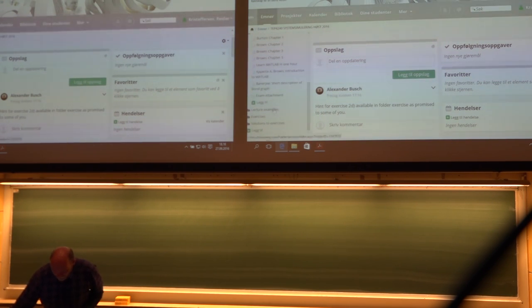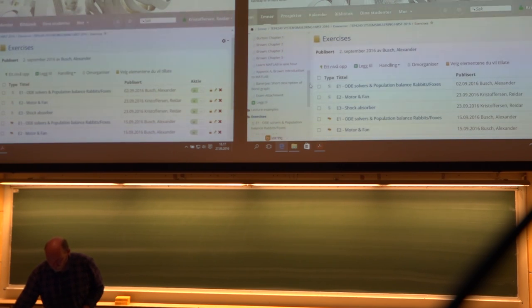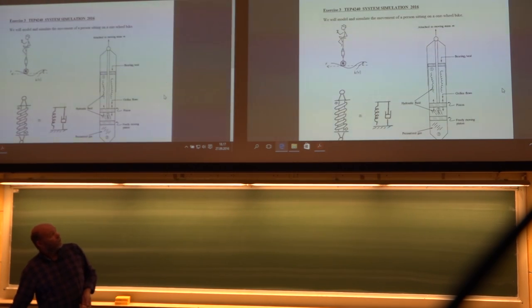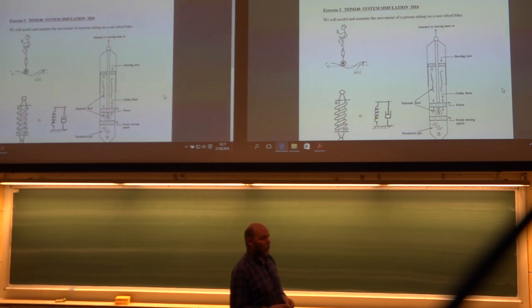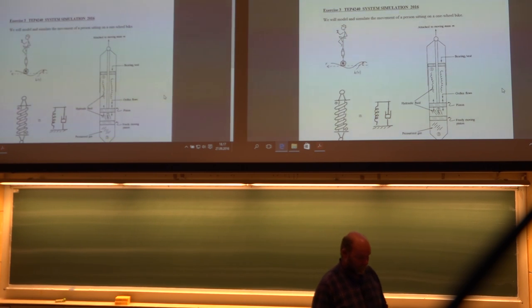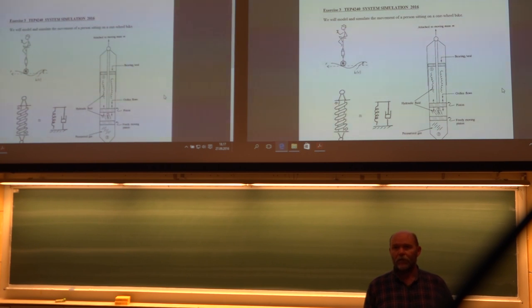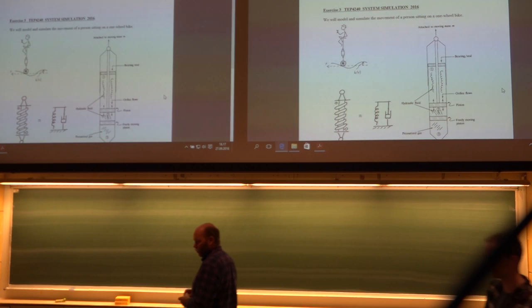Also you have been given exercise number 3. So just to have a peek on that one. Here we go. A one wheel bike. And you are to design a shock absorber so that you don't spill your martini. It's very important, of course.